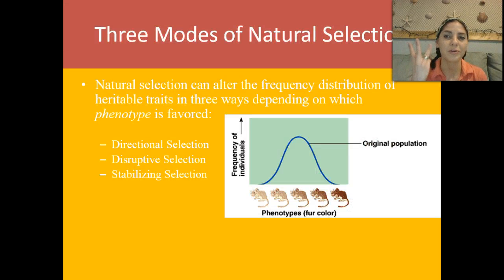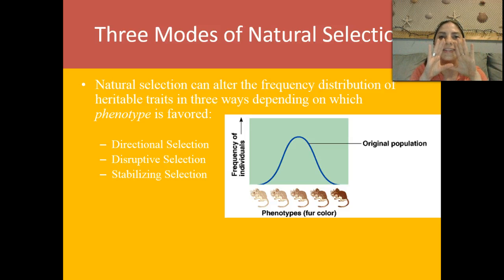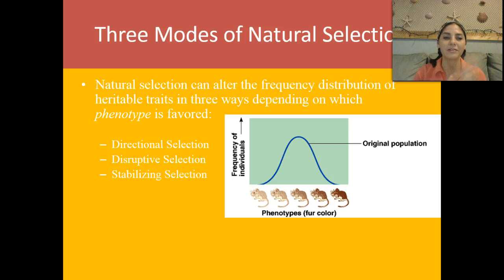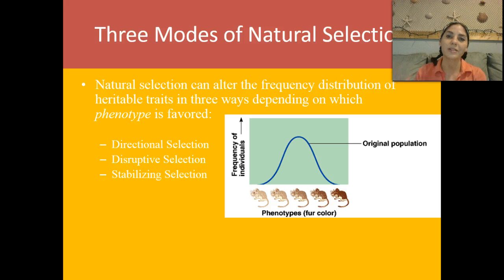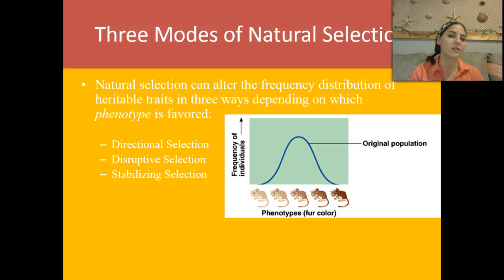Moving on to our three modes of natural selection — take out a pen or pencil and write these down. Natural selection can alter the frequency distribution of heritable traits in three ways depending on which phenotype is favored. We have directional selection, disruptive selection, and stabilizing selection. You will need to know graphs for each and be able to identify which mode applies given a paragraph description — is it directional, disruptive, or stabilizing?